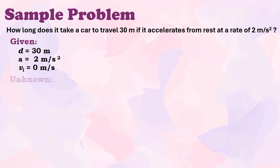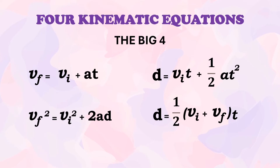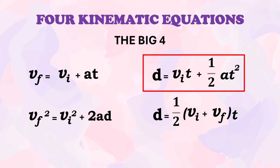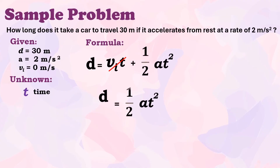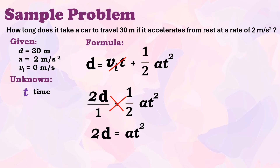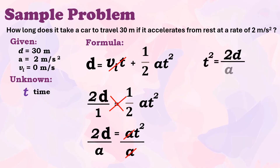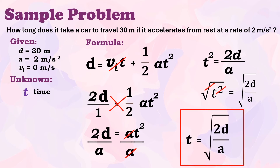We have displacement and acceleration given, so we use: D = v_i × t + ½ × a × t². Since initial velocity is 0, this simplifies to D = ½at². To solve for time, we cross-multiply to get 2D = at², then divide both sides by acceleration: t² = 2D ÷ a. Taking the square root of both sides, the final formula is: t = √(2D ÷ a).